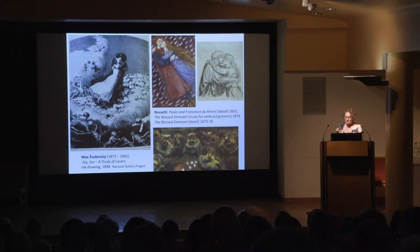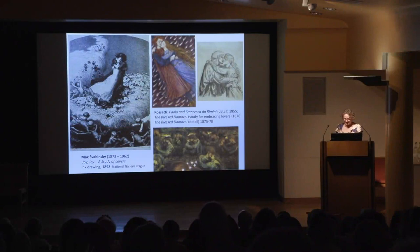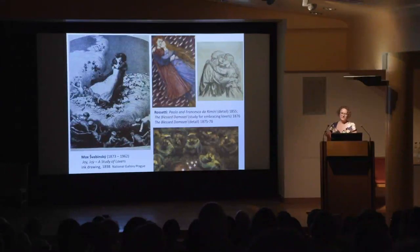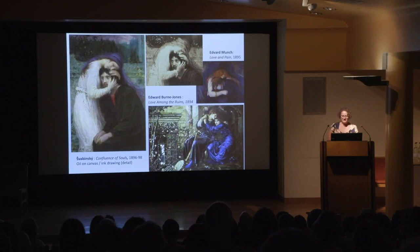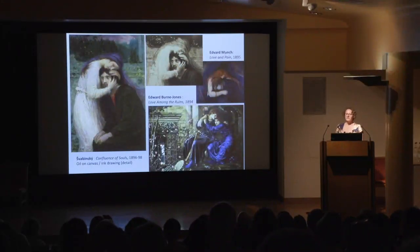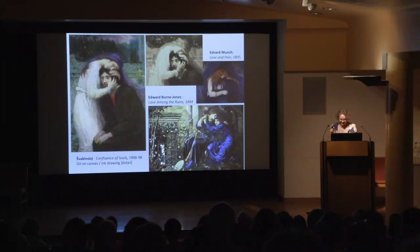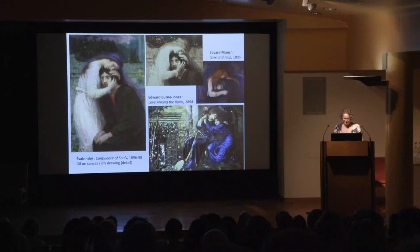Vrchlický also wrote two poems specifically about Rossetti's works — in 1896, two poems dedicated to Rossetti's paintings La Bella Mano and the Astraea Sirica, and a poem entitled Dante Gabriel Rossetti in 1891, mostly dedicated to the death of Elizabeth Siddal. For the Czech audiences, Rossetti and Burne-Jones became synonymous. When you read articles about Pre-Raphaelites, these are the two names that jump out repeatedly, and it's very difficult to find other names appearing.